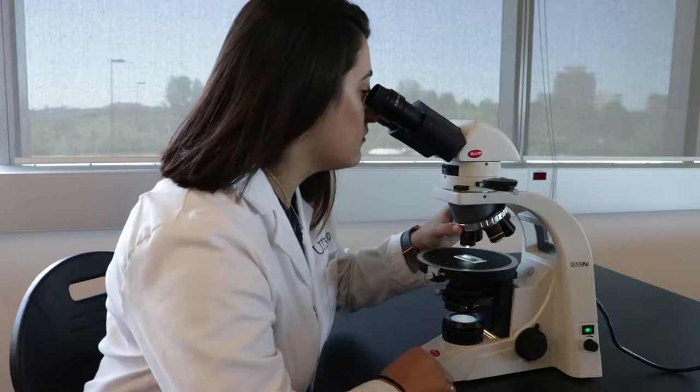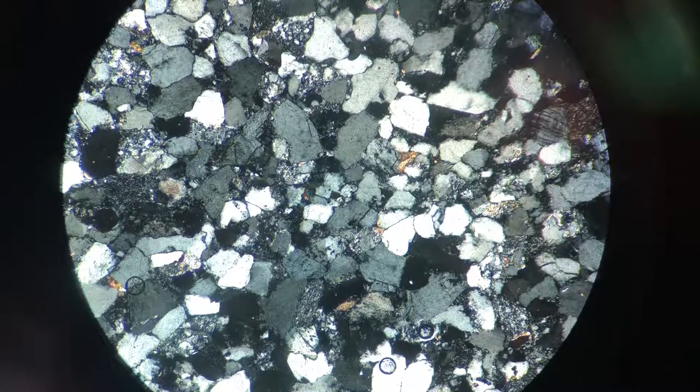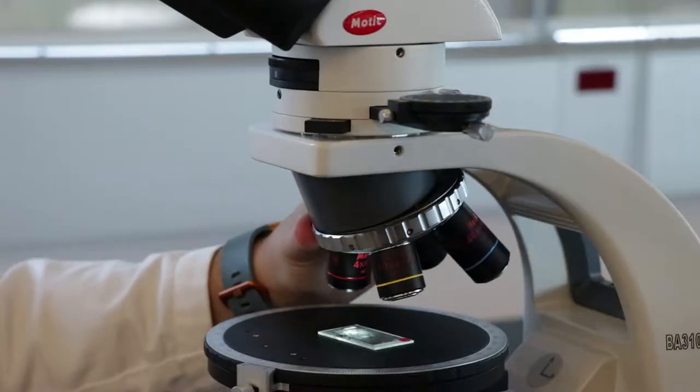Sometimes, your thin section may show incorrect interference colors in XPL. To test for this, it's best to look at the minerals quartz and feldspar as they're very common and easy to identify.